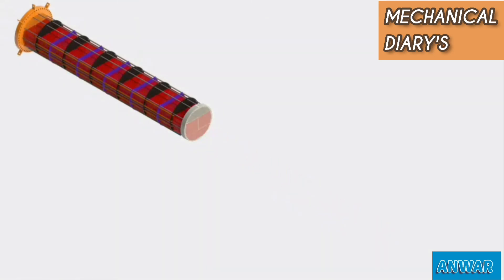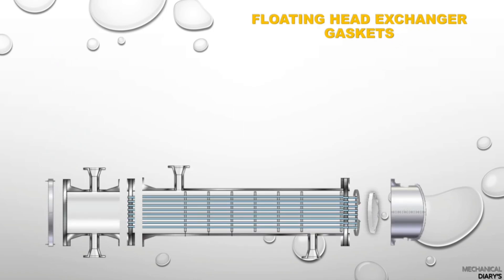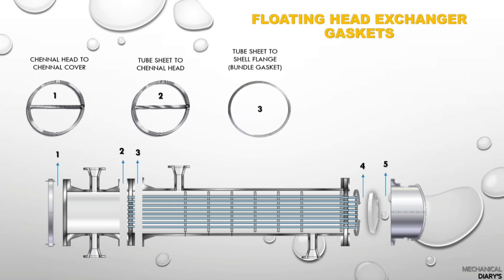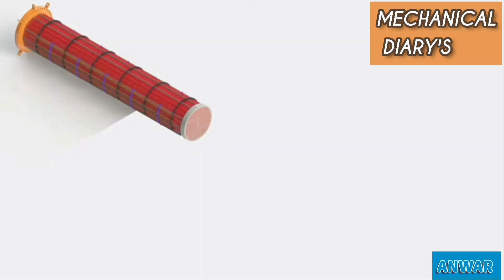One of the most common and very important questions is about floating head exchanger gaskets. Floating head exchangers always have five types of gasket. In this video you will know the five gasket names and where each is placed. First gasket: channel head to channel cover. Second: tube sheet to channel head. Third: tube sheet to shell flange. Fourth: floating head gasket. Fifth: shell back cover gasket.